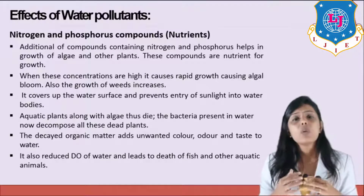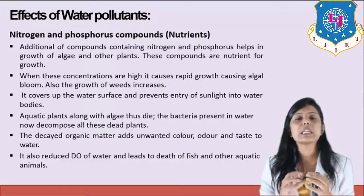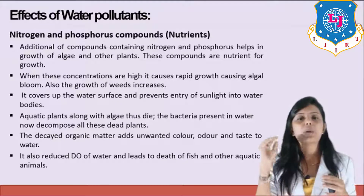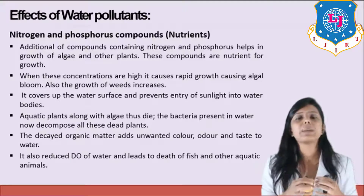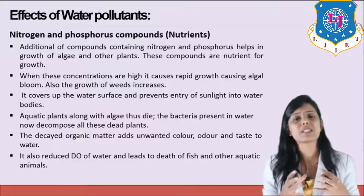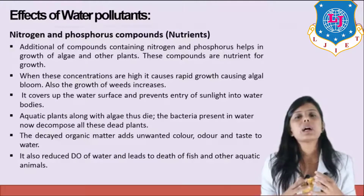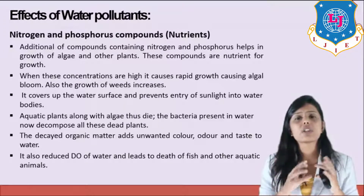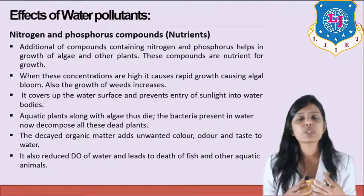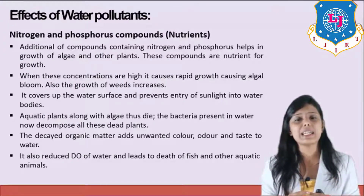When excessive nitrogen and phosphorus is present in water, it results in an increase of algae. As algae covers the water surface area, it blocks sunlight from reaching aquatic plants. Without sunlight, aquatic plants cannot perform proper photosynthesis and eventually die. When organisms die, bacteria carry out decomposition using dissolved oxygen. The standard concentration of oxygen in water should be 8 to 15 milligram per liter, but as dissolved oxygen is consumed by bacteria for decomposition, its concentration reduces, resulting in the death of more aquatic plants and animals.